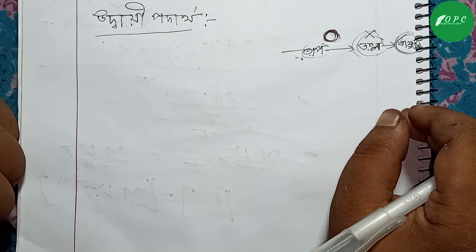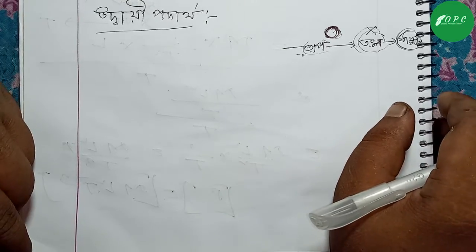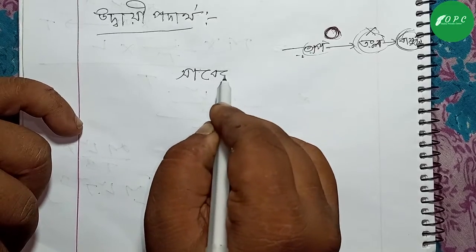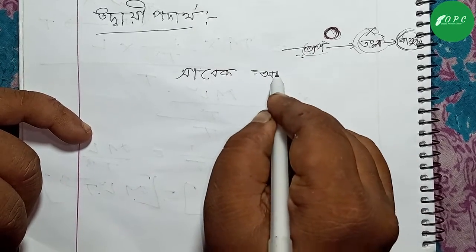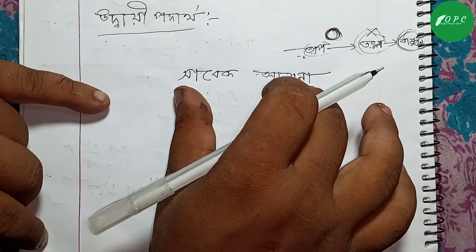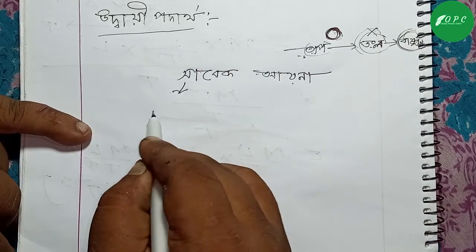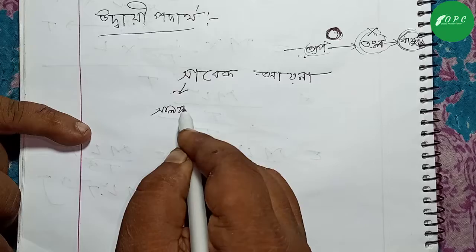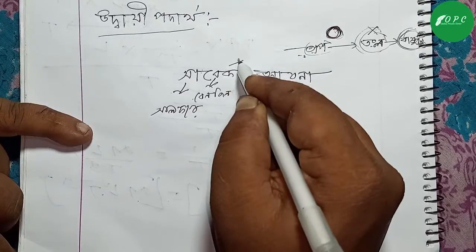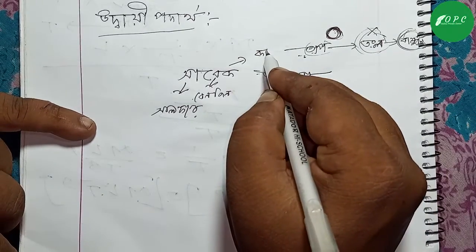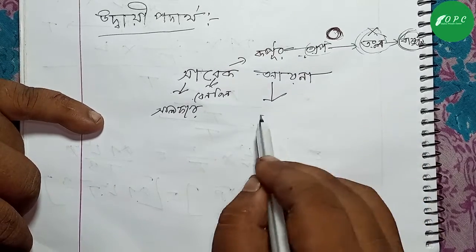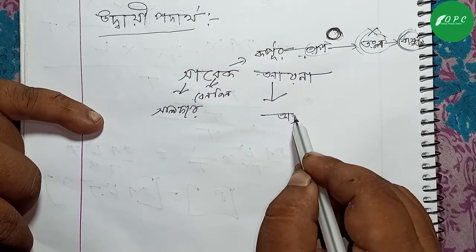আসলে এই কনফিশনে পড়া যায় কো। আসে সাধারণত সুন্দর মতে যেগুলো আসে সেগুলো হলো সাধারণত উদায়ী পদার্থ। এটা হলো সালফার।